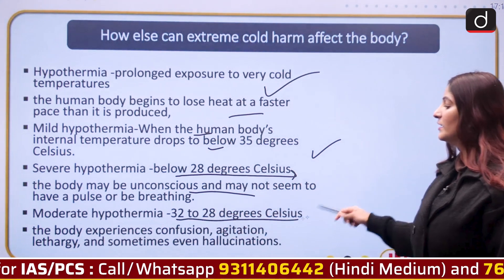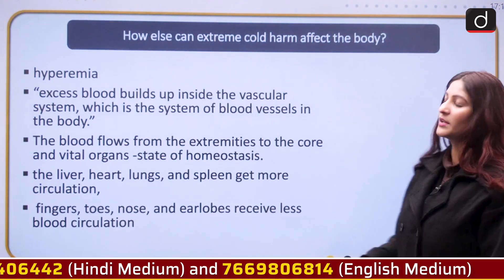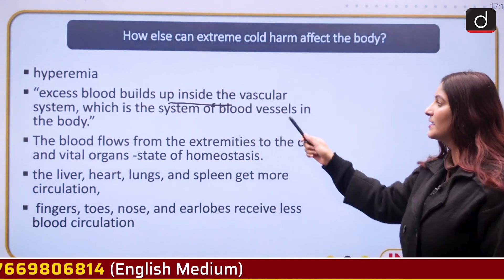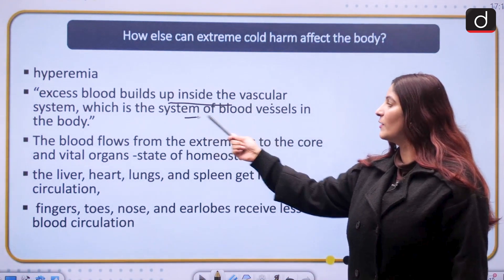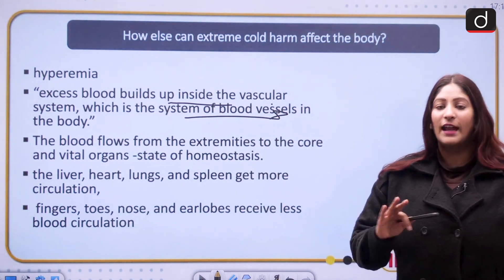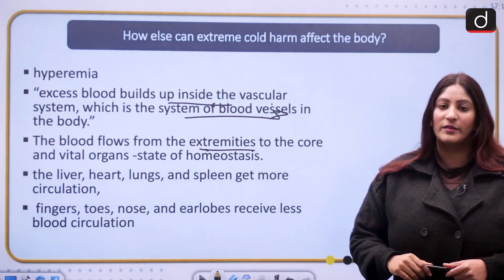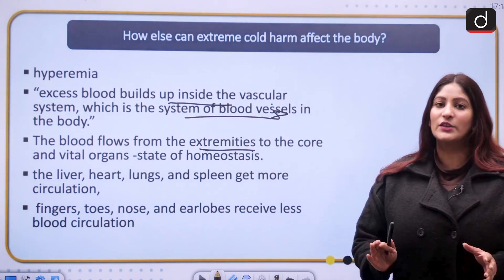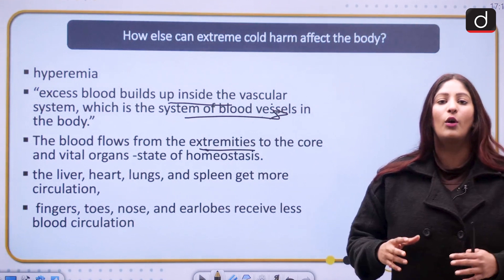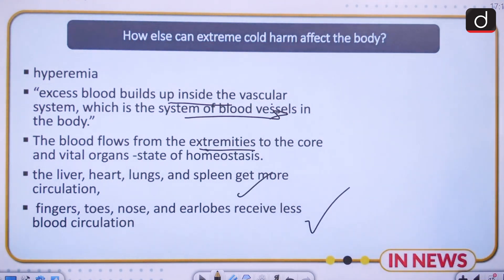Moderate hypothermia occurs between 32 and 28 degrees Celsius, where the body experiences confusion, agitation, lethargy, and even hallucination. Another condition is hyperemia — a phenomenon when excess blood builds up inside the vascular system, the system of blood vessels in the body. Blood moves away from extremities like fingertips, nose, and toes to more vital organs such as the liver and heart, which need to be kept warm to function normally.